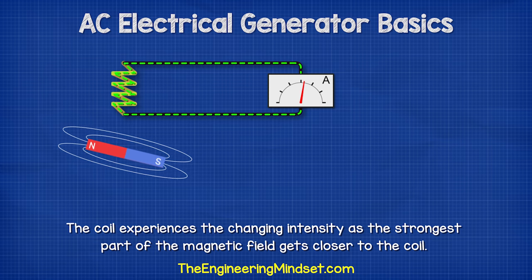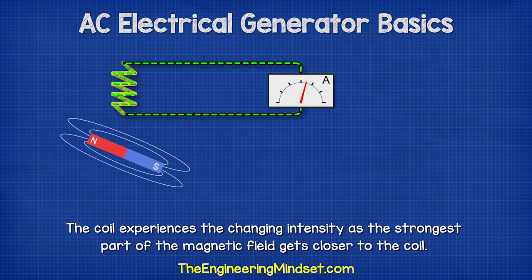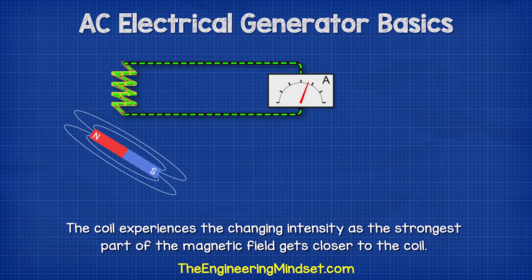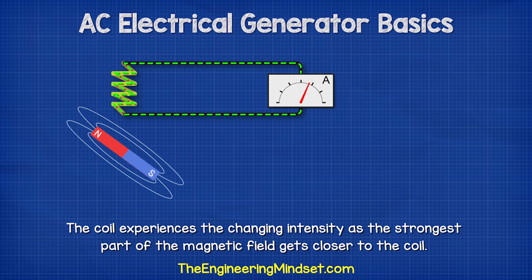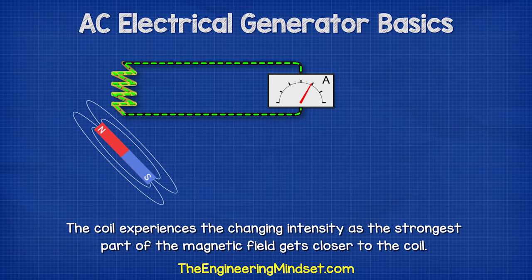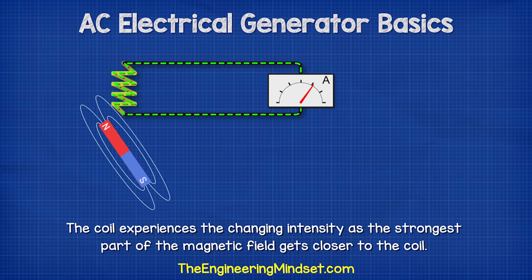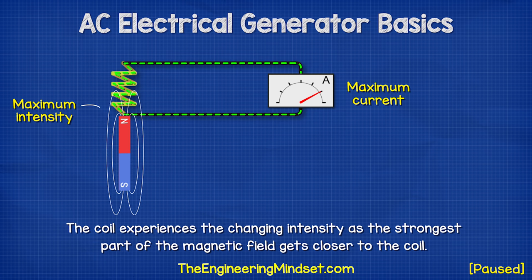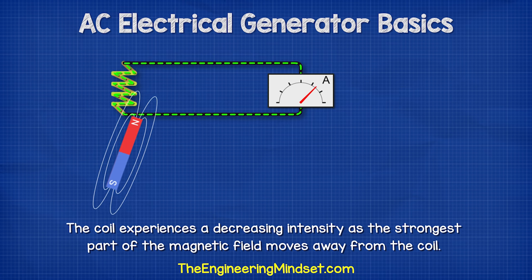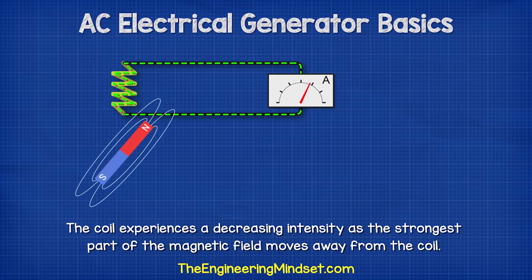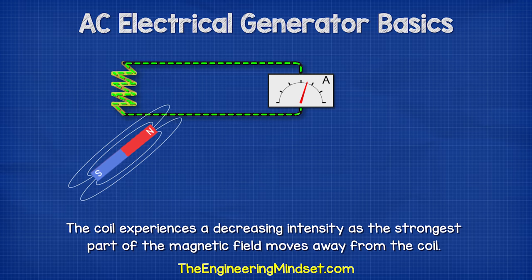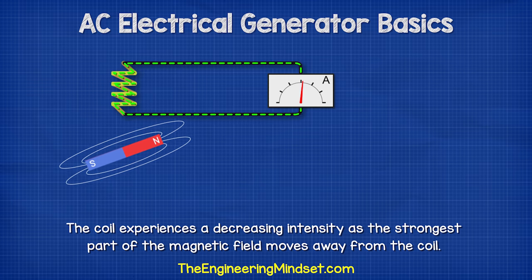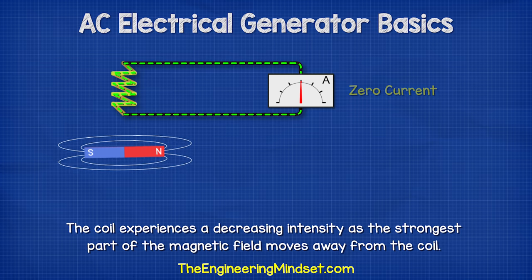As the magnet starts to rotate, the strongest part of the magnetic field gets closer and closer to the coil. The coil experiences a changing intensity of the magnetic field, which causes more and more electrons to be pushed forwards up until maximum intensity. Then the magnet starts to move away from the coil, so the magnetic field begins to decrease, and so does the current of electrons until it reaches zero again.